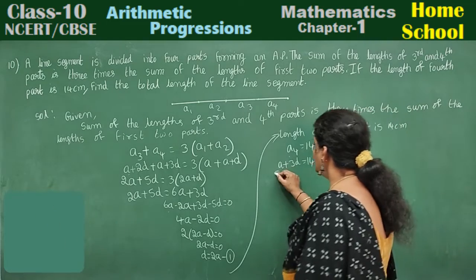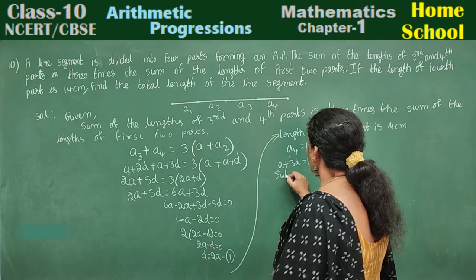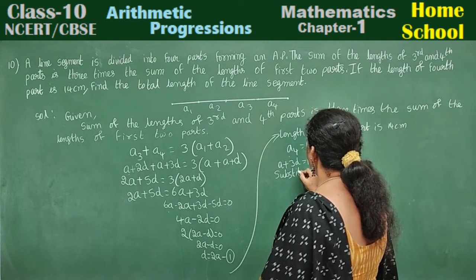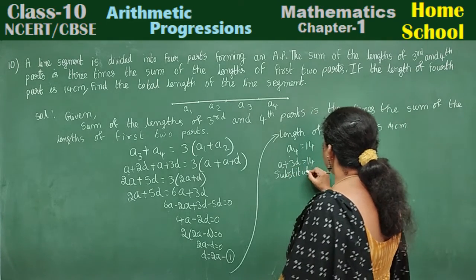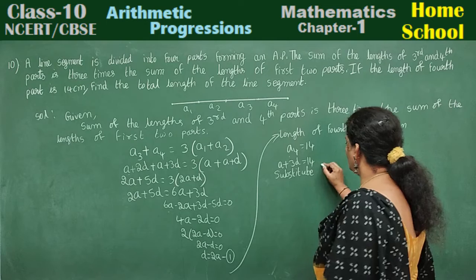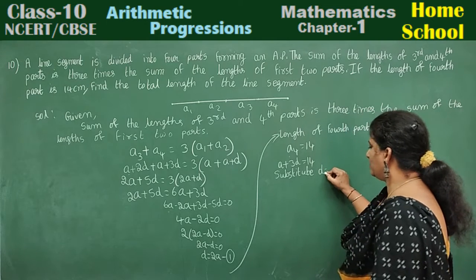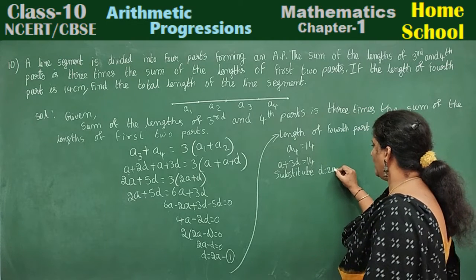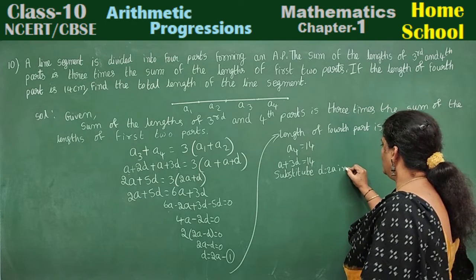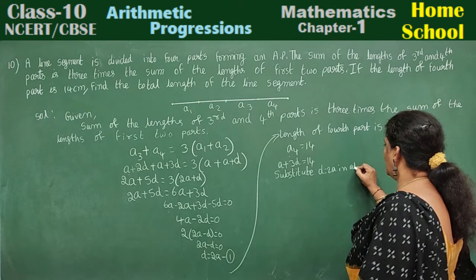Substitute d is equal to 2a into the equation a plus 3d equals 14.